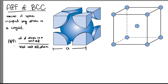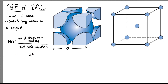For the equation, APF is the volume of atoms in a unit cell over the total unit cell volume. For this unit cell, the side is termed as A, so the volume of the unit cell will be A cubed.